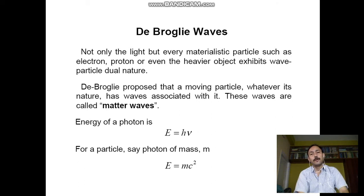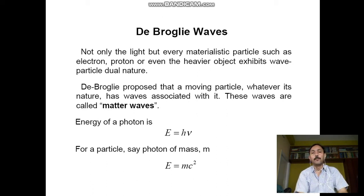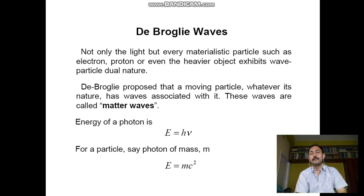De Broglie waves: not only light, but every materialistic particle such as electron, proton, or even heavier objects exhibits wave-like dual nature. De Broglie proposed that a moving particle, whatever its nature, has waves associated with it. These waves are called matter waves.